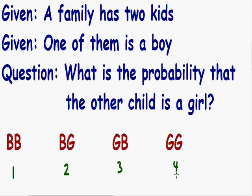We know for a fact that one of the children is a boy. Based on that information, combination number 4 is not possible because combination 4 has two girls — one of them is not a boy. So we know that combination number 4 is eliminated.